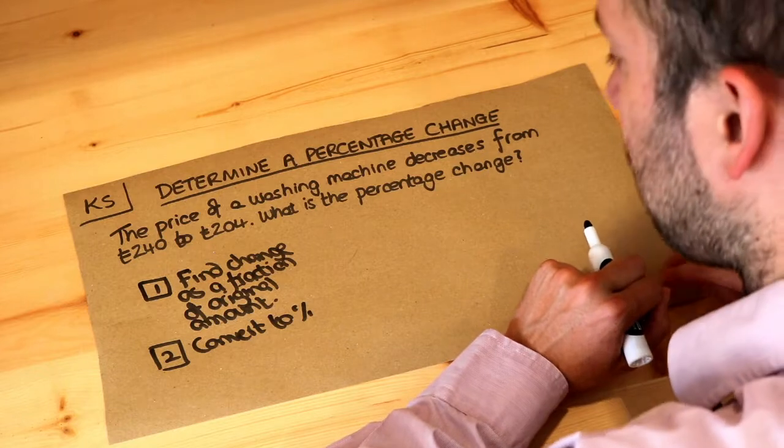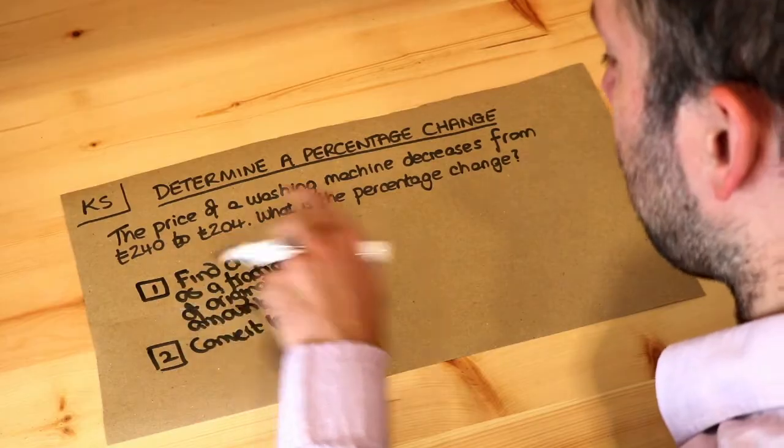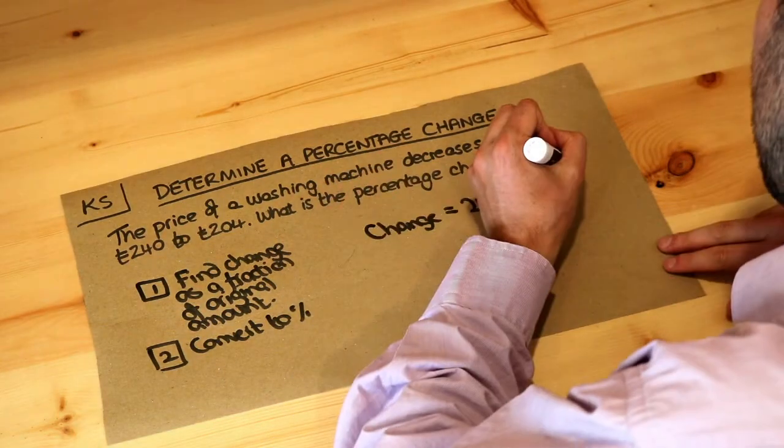Now let's do that with this particular example here. What is the change as a fraction of the original amount? Well the change from £240 to £204, let's work that out, is £36.